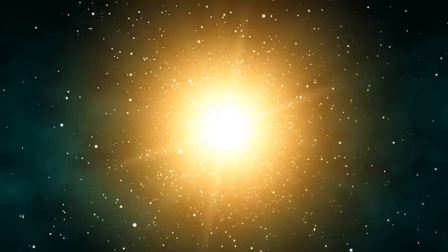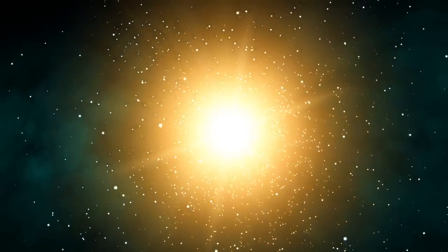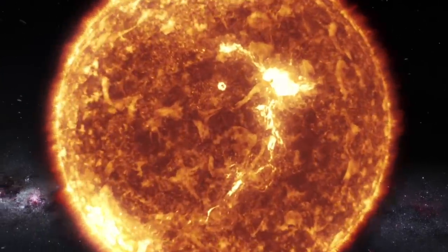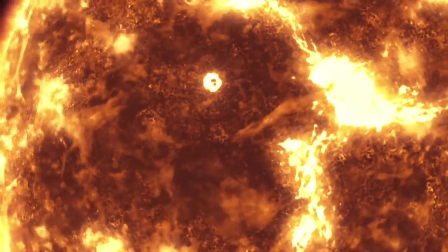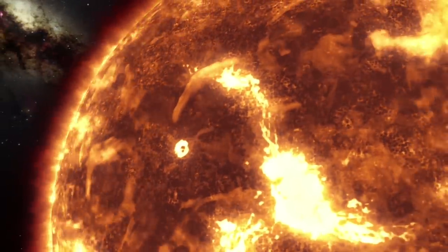A type of exoplanet that is similar in size and mass to Jupiter but much closer to its parent star. This proximity to the star means that WASP-103b is subjected to temperatures of up to 4400 degrees Fahrenheit, which is hot enough to vaporize many elements.